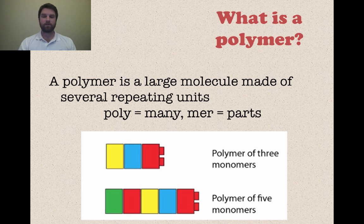A polymer is a large molecule made up of several repeating units. So a polymer is several monomers put together. So again, look at these Legos. That's what I want you to think of. So you got three monomers in the first one and five monomers in the second one. Each one of those would be a polymer.